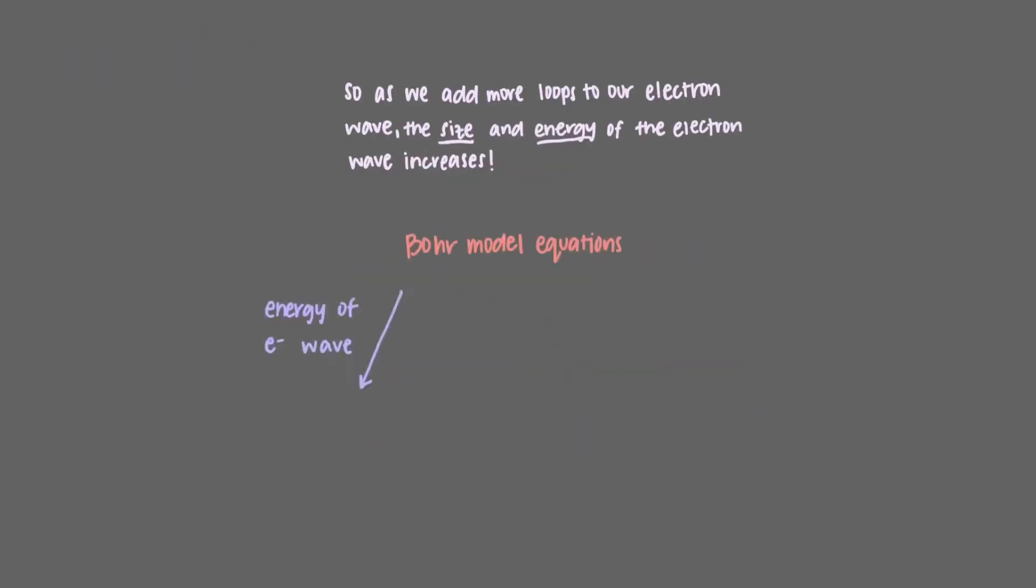The energy of an electron wave is given by this equation, and the radius of the wave is given by this equation, where n is the number of loops in the electron wave and z is the charge of the nucleus, the number of protons in the nucleus.